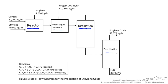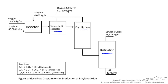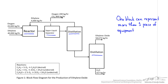Most block flow diagrams have far more blocks than this. Keep in mind that some of these blocks may represent more than one piece of equipment in the actual process. For example, this flash unit can represent more than one flash separator. The beauty of a block flow diagram is that it's designed to be simple and only show main aspects of a process.